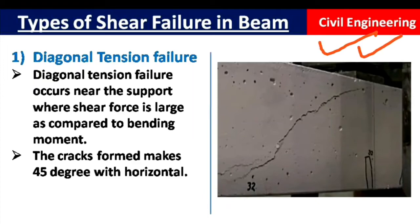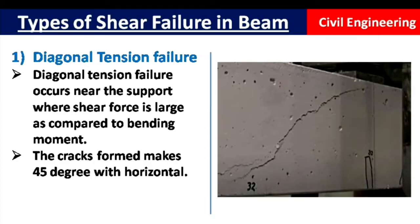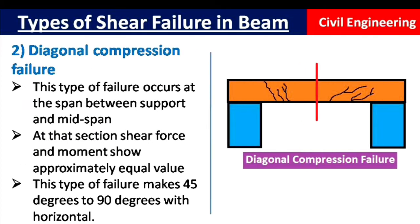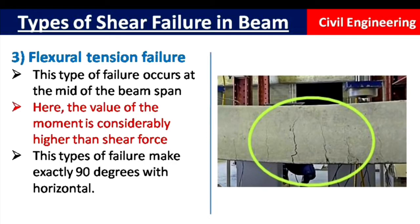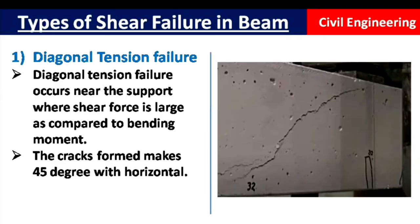Hello guys, welcome to the Civil Engineering YouTube channel. In this video I will tell you the different types of shear failure in beams. When we construct a beam, it can fail in different ways. There are three types of failure in a beam: diagonal tension failure, diagonal compression failure, and flexural tension failure. Let us discuss them one by one.